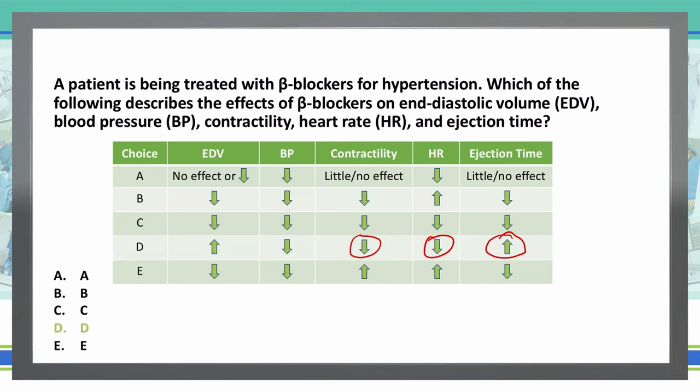One further thing you didn't have to know to answer this, but beta blockers decrease the secretion of renin. Therefore, the renin-angiotensin cascade is going to be diminished, and that is what reduces our blood pressure.